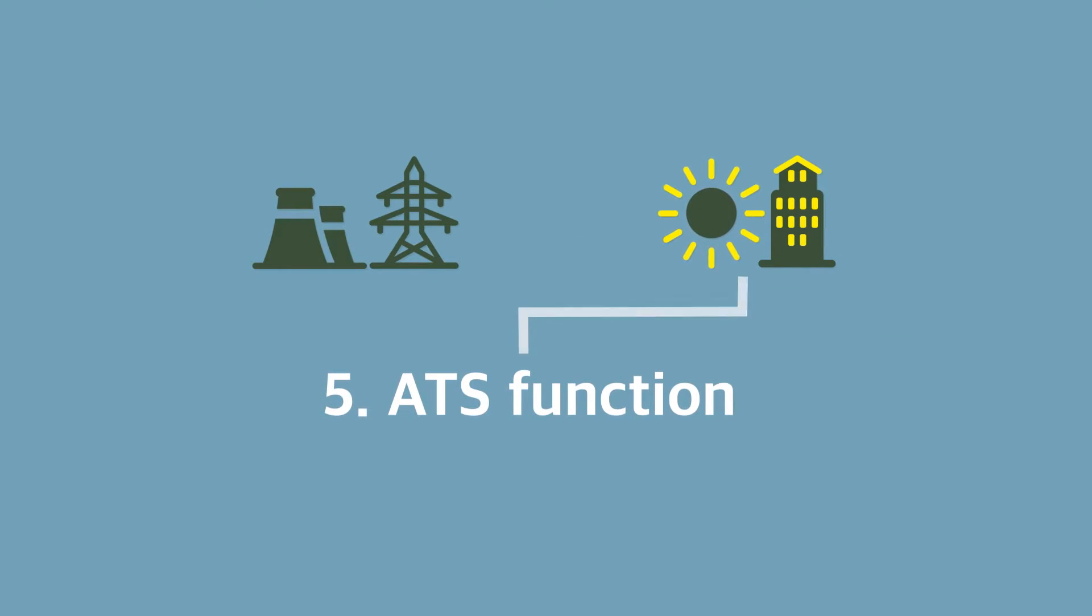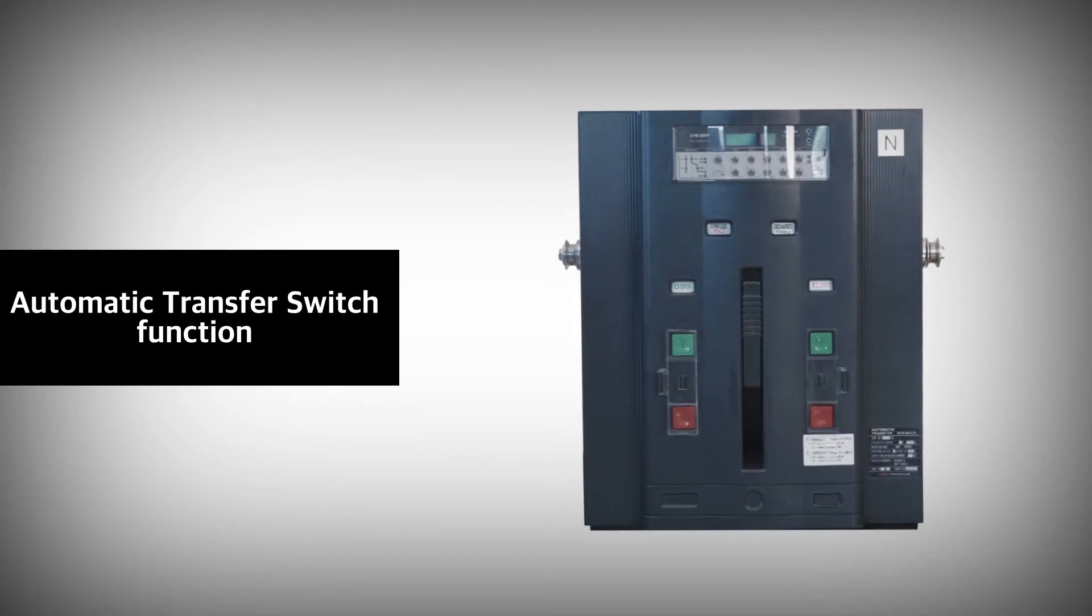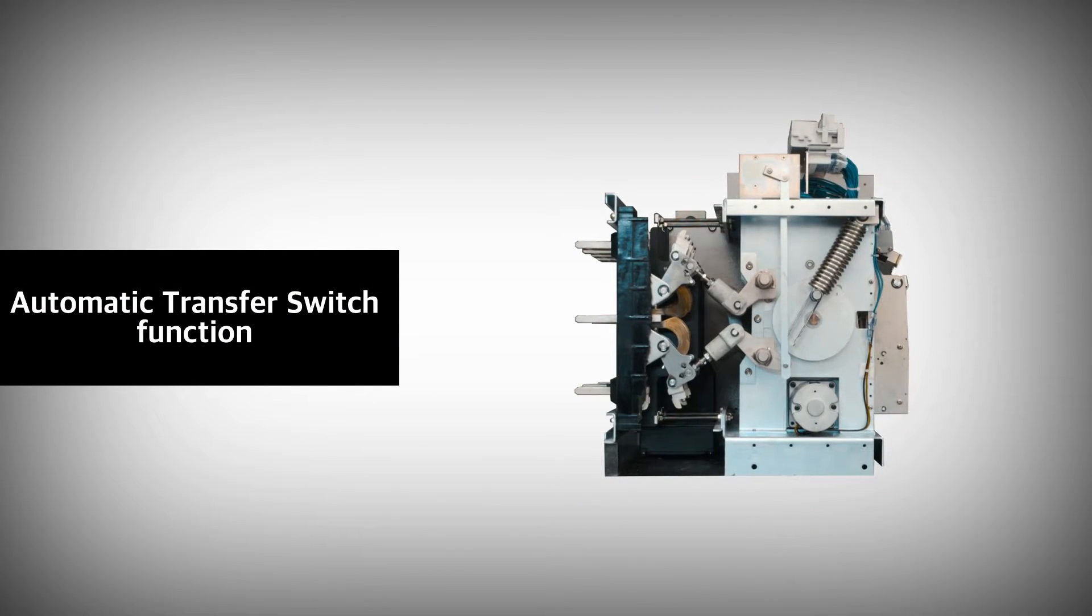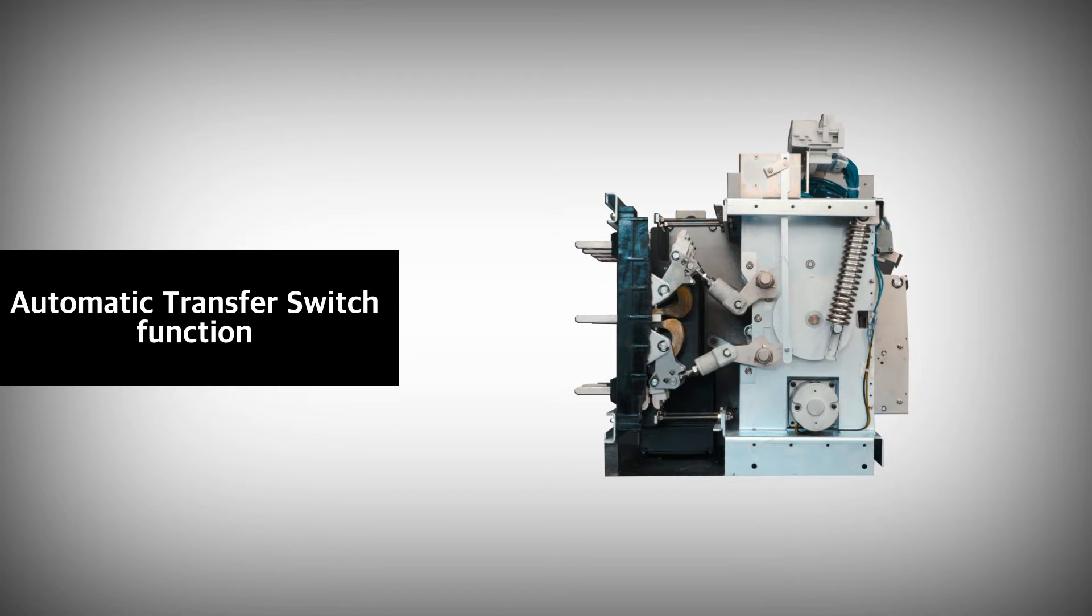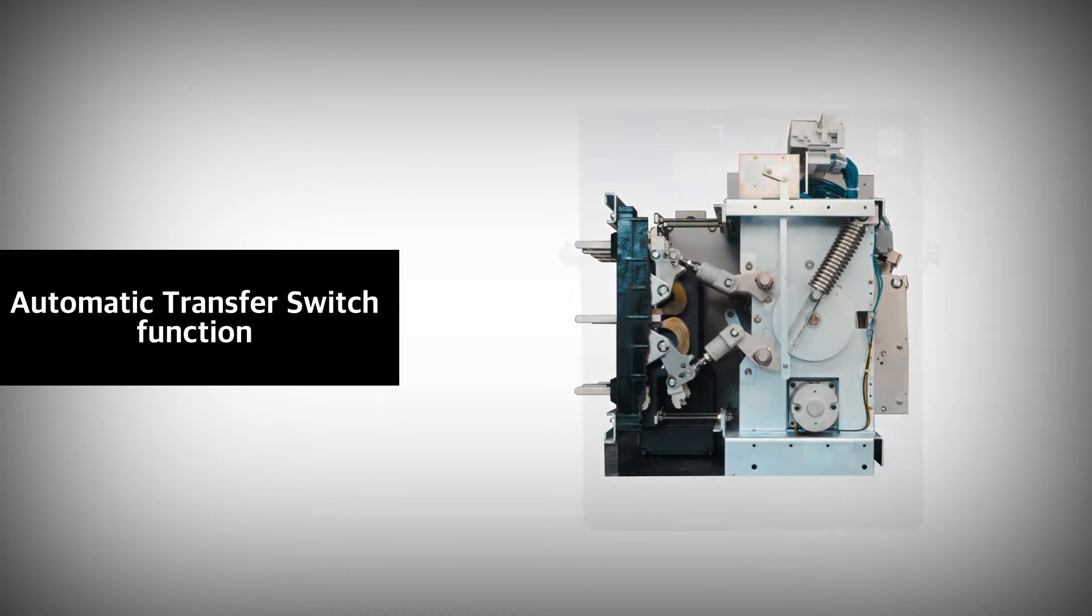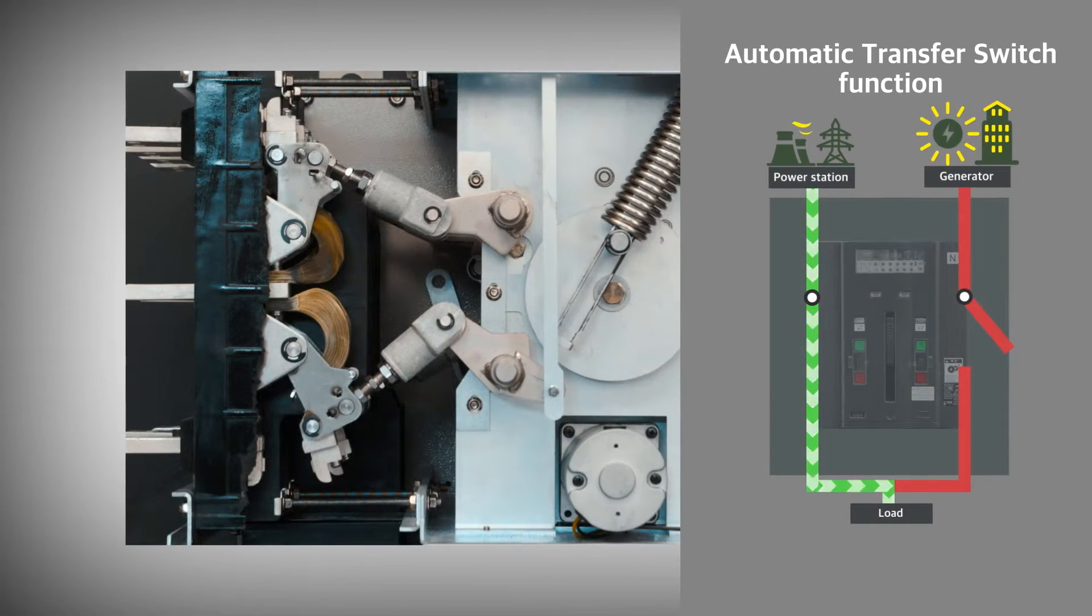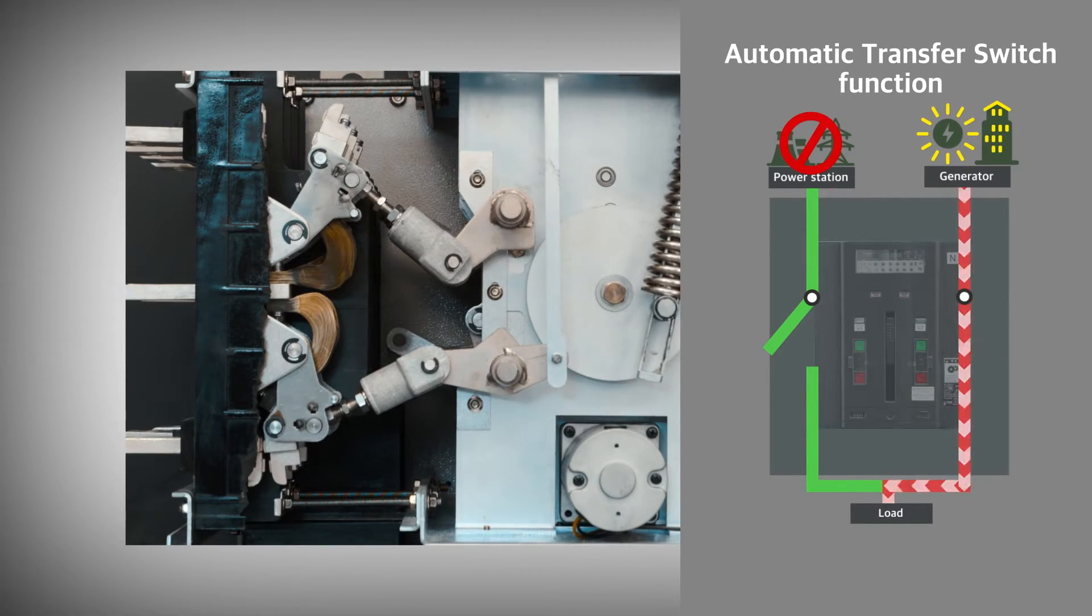ATS function which is one of the DCB functions gets converted into the emergency source when the static or power supply is stopped while the normal source like the existing ATS. Moreover this is the function that gets converted from the emergency to the normal sources when the normal source is reinstated.